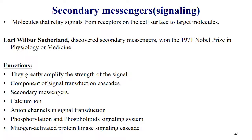Functions of secondary messengers include greater amplification of signal strength, component of signal transduction cascade, secondary messengers like calcium ions, anion channels in signal transduction, phosphorylation, phospholipid signaling system, and mitogen activated protein kinase signaling cascade.